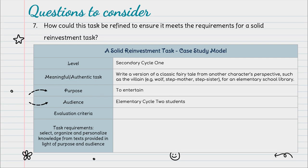Purpose and audience go hand in hand, but unfortunately we have neither in the case study model. We're having Secondary Cycle 1 students write a version of a classic fairy tale from another character's perspective. The audience for this could easily be Elementary Cycle 2 students, and the purpose could be to entertain them.